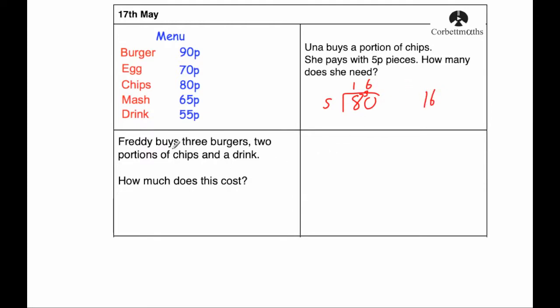Next, Freddy buys 3 burgers, 2 portions of chips and a drink. How much does this cost? So 3 burgers, we're going to do 90 multiplied by 3. When we do that, 9 times 3 is 27, adding on the 0, 270 pence.